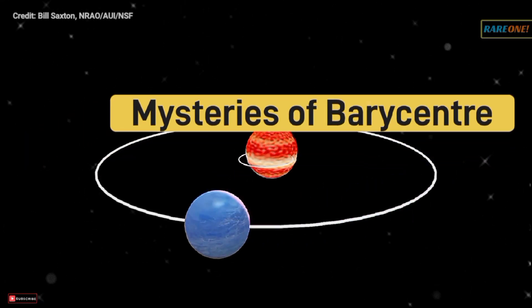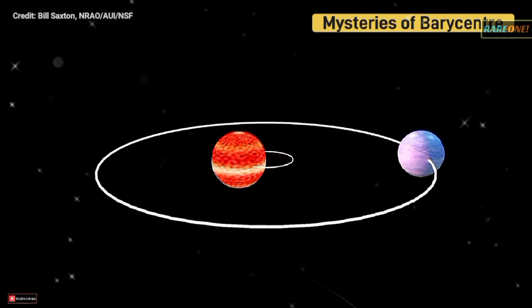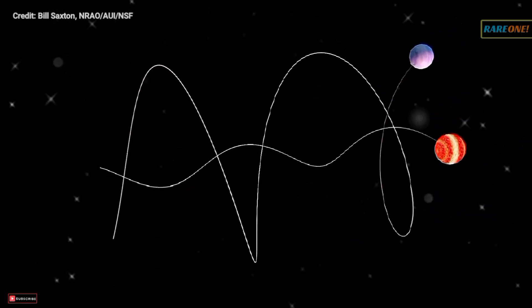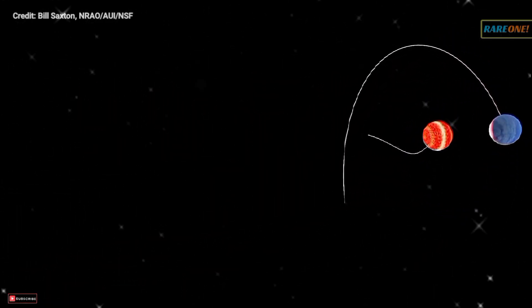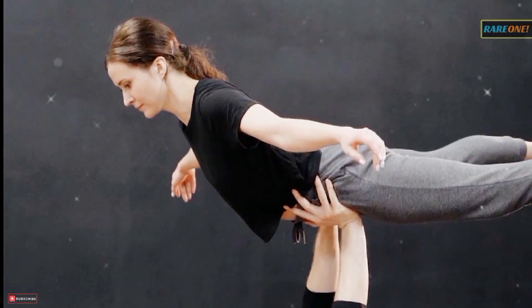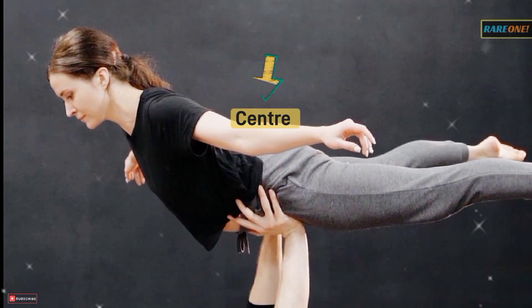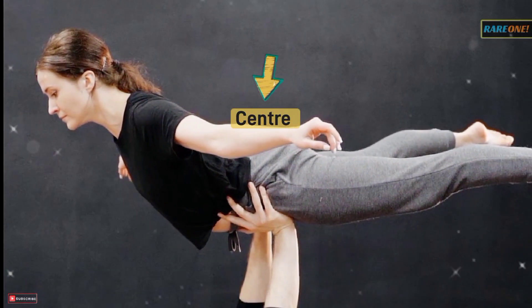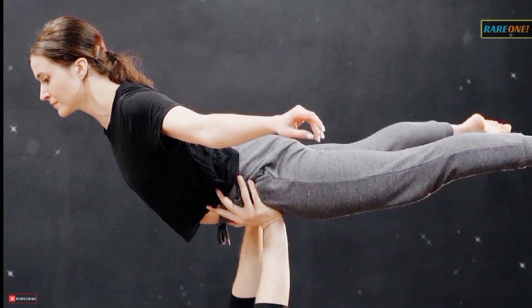So what exactly is a barycenter? Let's break it down. Imagine every object having a sweet spot, a point where it perfectly balances. This sweet spot is known as the center of mass, or center of gravity.